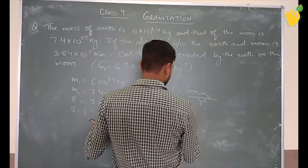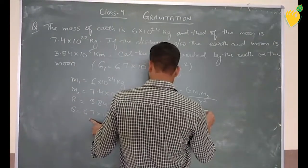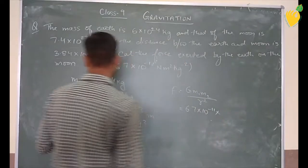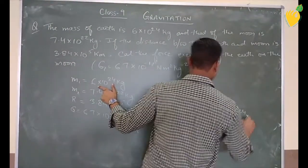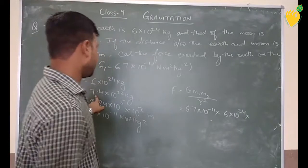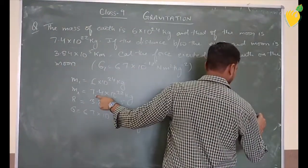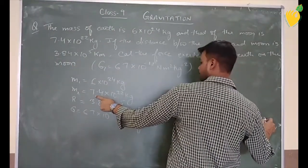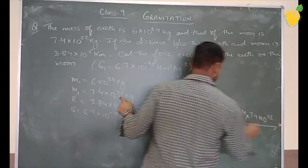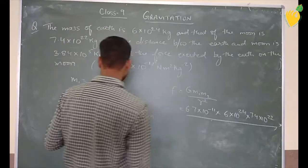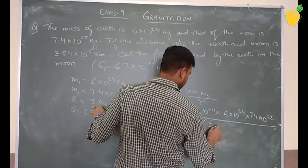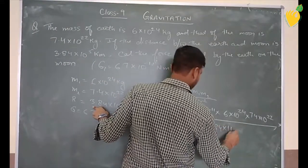G value is 6.7 into 10 to the power minus 11 into mass, 6 into 10 to the power 24. Second mass, 7.4 into 10 to the power 22 divided by R. R is equal to 3.84 into 10 to the power 5.